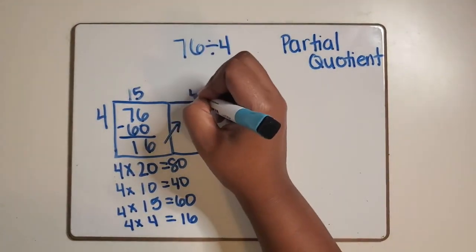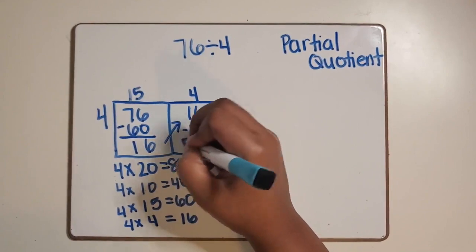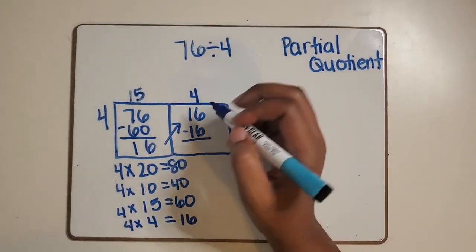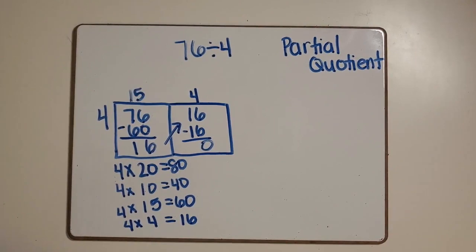So four times four is 16, so we are going to subtract the 16 from the 16 and now we have zero remaining.